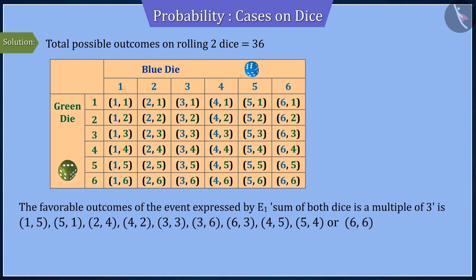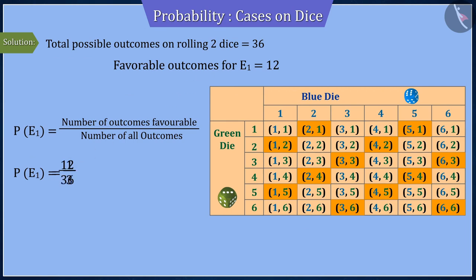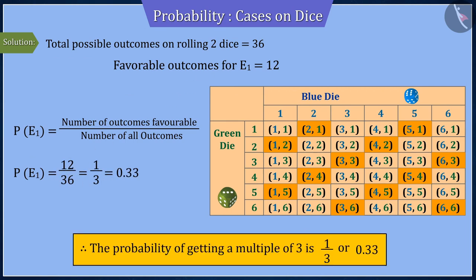From the table, we get 12 such results corresponding to event E1. Hence, by the probability formula, the probability of getting a multiple of 3 is 1 by 3 or 0.33.